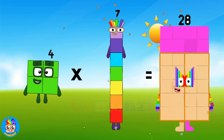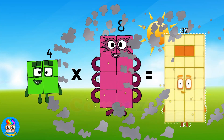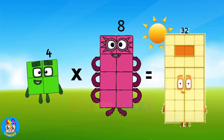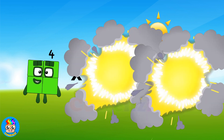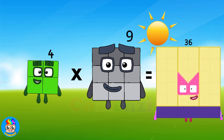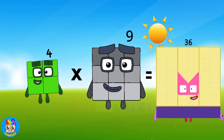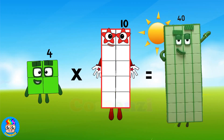Four times seven is twenty-eight. Four times eight is thirty-two. Four times nine is thirty-six. Four times ten is forty.